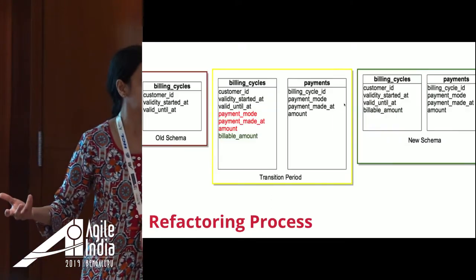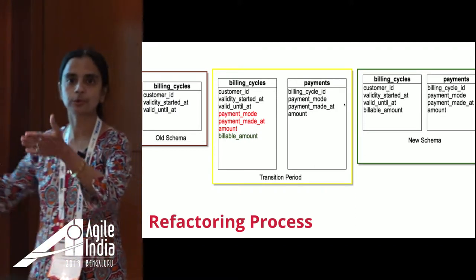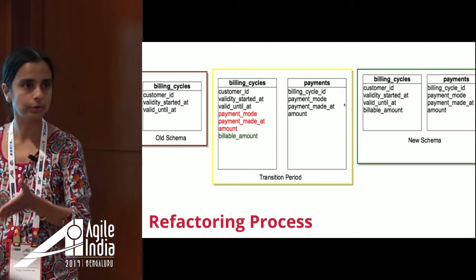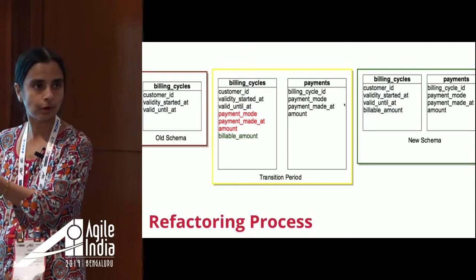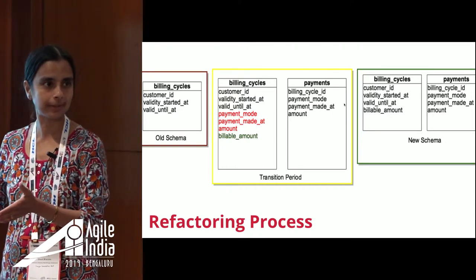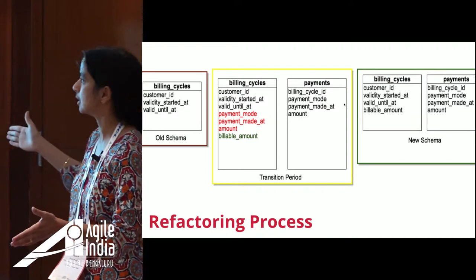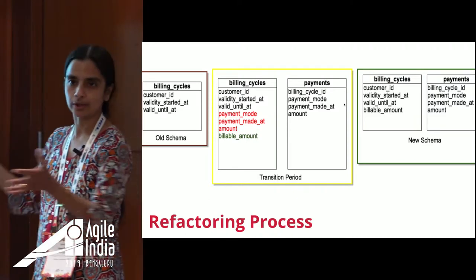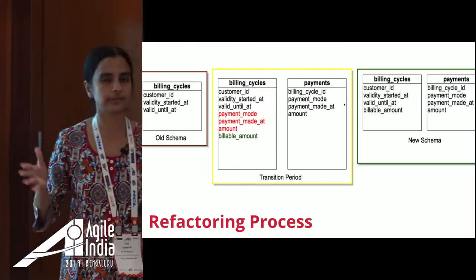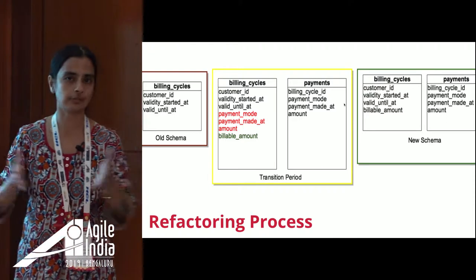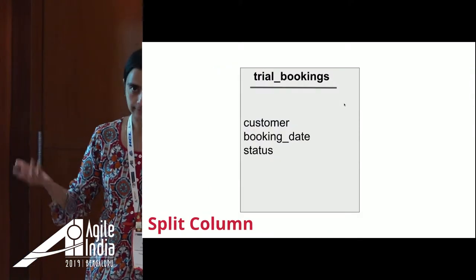This is the entire refactoring process: first you introduce the new changes, then you have a transition period migrating to the new way of implementing. Once you have completely transitioned, you contract. This is the crux of expand-contract. Let's look at another example — this is called the split column.